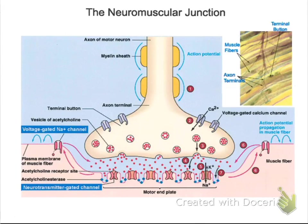We're going to be looking at the neuromuscular junction. This is the area in which a nerve cell interacts with a muscle cell. What happens is that the nerve cell or neuron is going to be sending a stimulus that's going to cause the skeletal muscle cell to contract. One nerve cell or motor neuron can actually stimulate one to hundreds of different skeletal muscle cells within a skeletal muscle, depending on what the need is and how strong the impulse is.